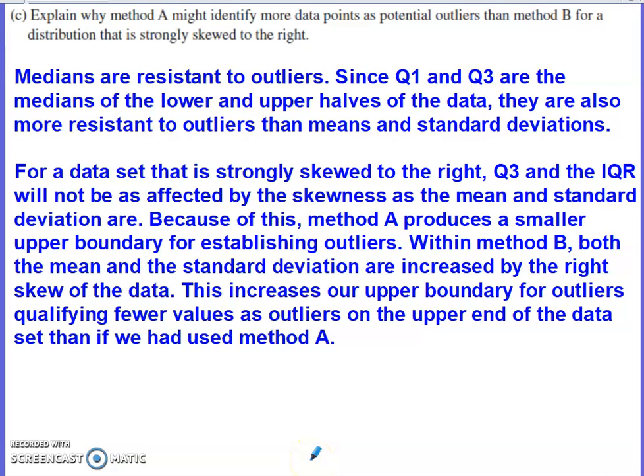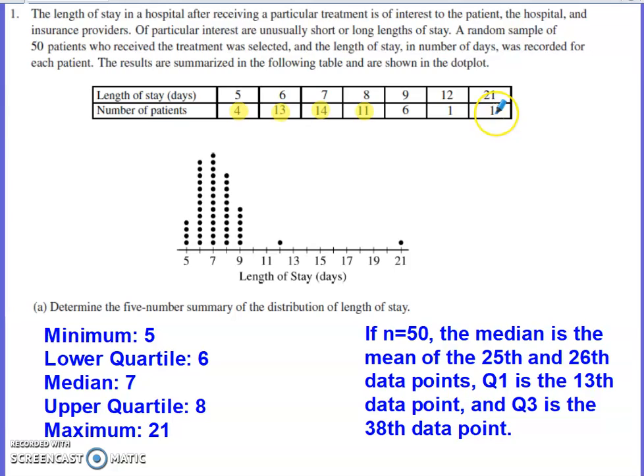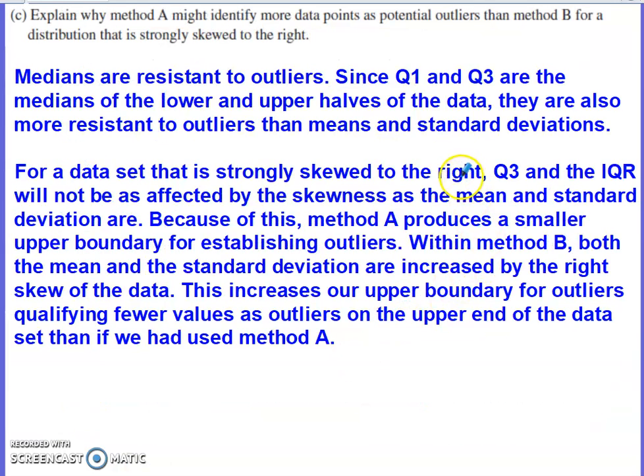Last part of this problem asks us to explain why method A might identify more data points as potential outliers than method B for a distribution that is strongly skewed to the right. So for a distribution that's strongly skewed to the right, especially one that has pretty obvious visual outliers on the upper end of the data, the median in the quartiles are not going to be affected by the skewness of the data or by the outliers that the data possesses on that upper end. So since the median and interquartile range are less resistant to skewness and outliers than the mean and standard deviation are, we end up with a lower upper boundary for outliers qualifying more values as outliers in method A.